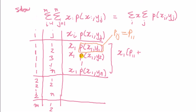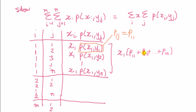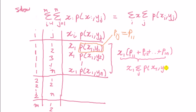You can see there's a common factor X1, so in summation notation this first block is X1 times the sum over J of P(X1, YJ). Similarly, the next block gives X2 times the sum over J of P(X2, YJ), and so on.